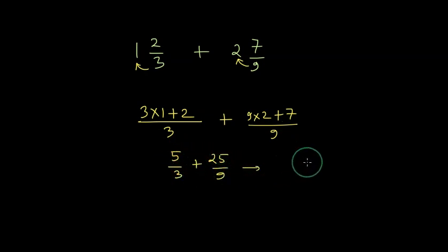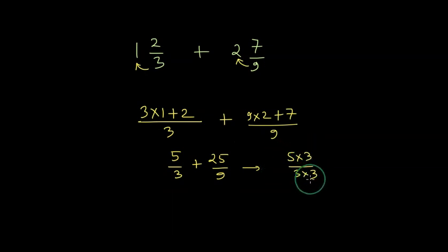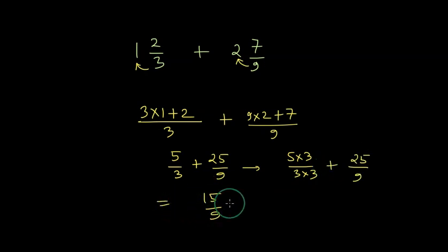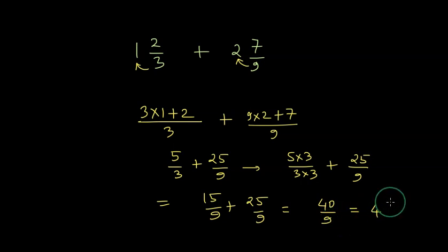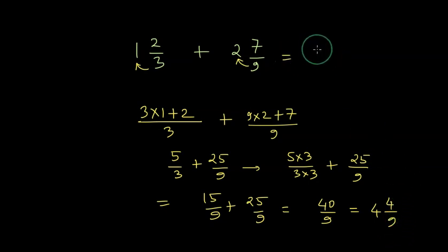If we multiply the first fraction by 3 in the numerator and denominator to get 9 as a common denominator, we get 15/9 plus 25/9. This gives us 40/9. Dividing 40 by 9, we get 4 wholes with a remainder of 4 and a denominator of 9. This is how we can add mixed fractions by converting them into improper fractions.